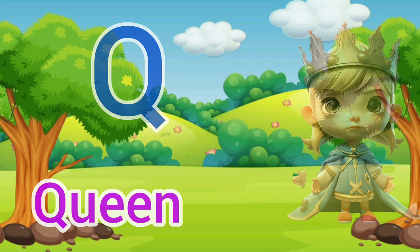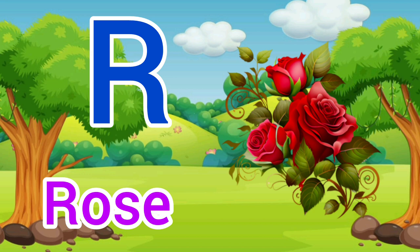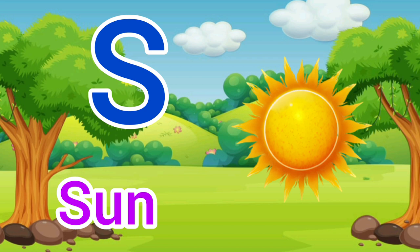R — R for rose. Rose means gulab. S — S for sun. Sun means suraj.